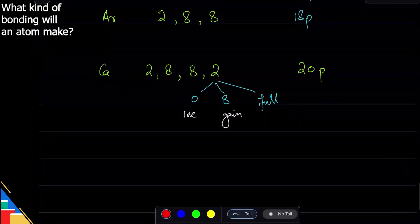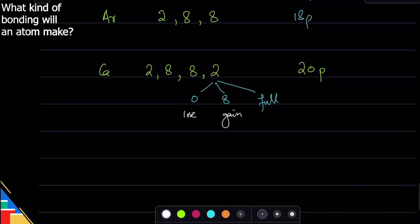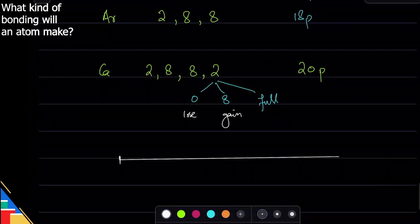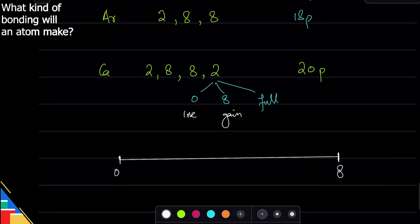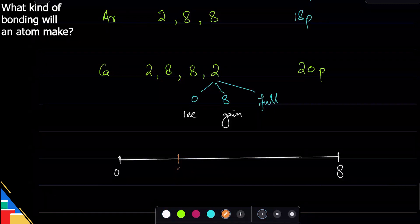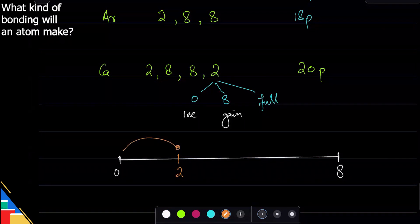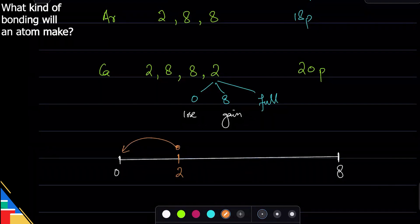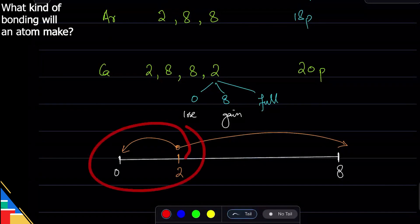Think about it. If you had a number line and this side is zero, this side is eight - let's forget about full because it's when the valence electrons change - and if this atom is at two, which will take less energy: going from two to zero or going from two to eight? Obviously this takes less energy, going from two to zero. So yes, it will lose these two to get to zero.